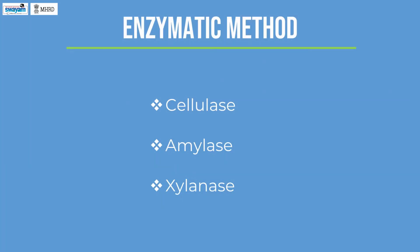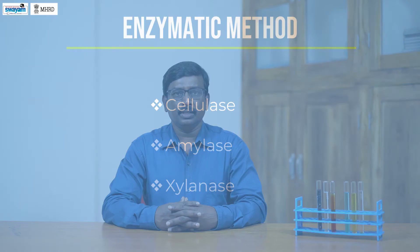Enzymatic Method. Enzymatic saccharification is gaining more attraction among industries because of its lesser negative impacts as well as higher efficiency in terms of sugar yield. Multiple enzymes are required for the degradation of various biomass polysaccharides. Cellulase, amylase, xylanase, etc. are some of the major enzymes used for the saccharification process.